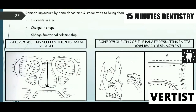The third mechanism is surface remodeling. Remodeling occurs by bone deposition and resorption to bring about an increase in size, change in shape, and change in positional relationship. Bone remodeling is seen in the midpalatal region, and remodeling of the palate results in its downward displacement.